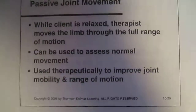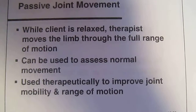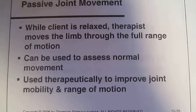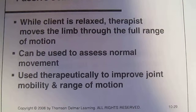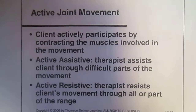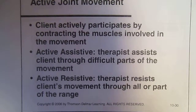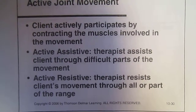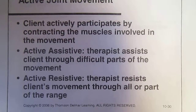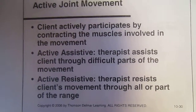Passive joint movement: while the client is relaxed, the therapist moves the limb through the full range of motion. Can be used to assess normal movement and used therapeutically to improve joint mobility and range of motion. Active joint movement: the client actively participates by contracting the muscles involved in the movement. Active assistive: the therapist assists the client through a difficult part of the movement, or assists through all or part of the range.